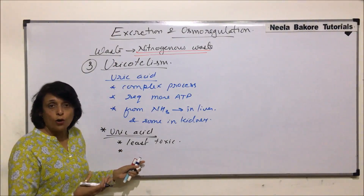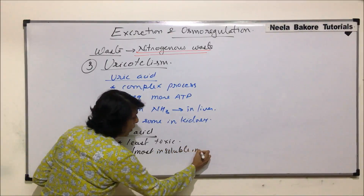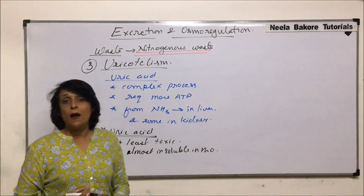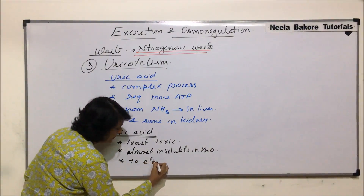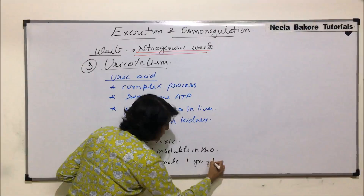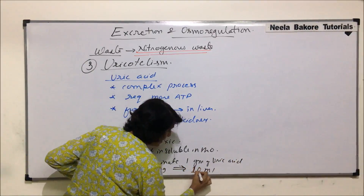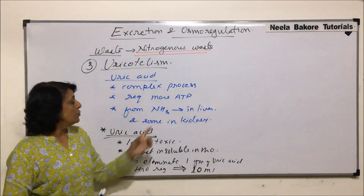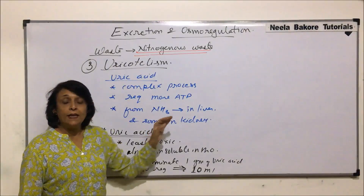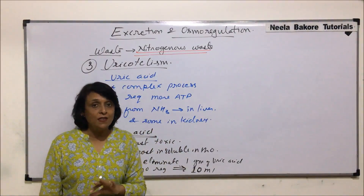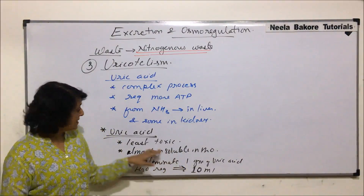Uric acid is almost insoluble in water. The amount of water required to eliminate one gram of uric acid is only 10 milliliters. To compare: to eliminate one gram of ammonia, the water requirement was 300 to 500 milliliters — almost half a liter. To eliminate one gram of urea it was about 50 milliliters, and to eliminate one gram of uric acid it is only 10 milliliters.